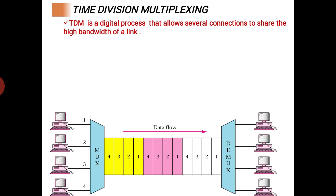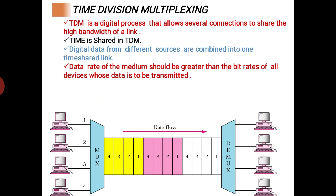Four devices send one bit each. One bit from each source — one, two, three, four — combined into a frame, either pink or white. One color indicates one frame. At the demultiplexer end, individual bits are passed to their respective devices. In TDM, time is shared, whereas in FDM, frequency was shared. Digital data from different sources are combined into a single time-shared link.